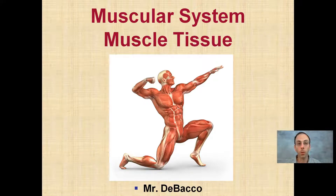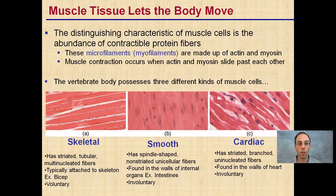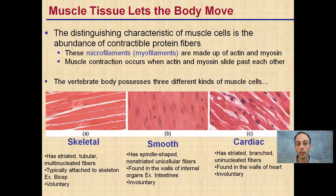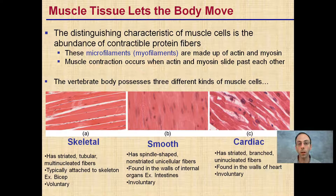Here I'm going to provide a brief overview of the muscular system, paying particular attention to the different types of muscle tissue and also the sliding filament theory in a general sense. Muscle tissue lets the body move. A distinguishing characteristic of muscle cells is the abundance of contractile protein fibers called microfilaments, which are made up of actin and myosin. When a muscle contracts, actin and myosin are sliding past one another — this is the basis of the sliding filament theory.